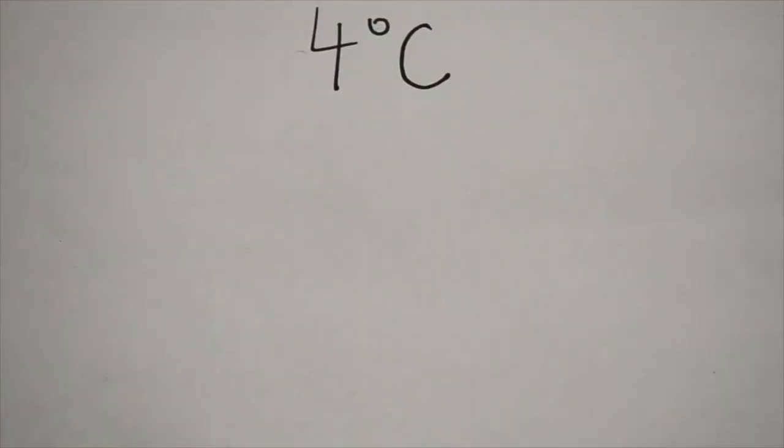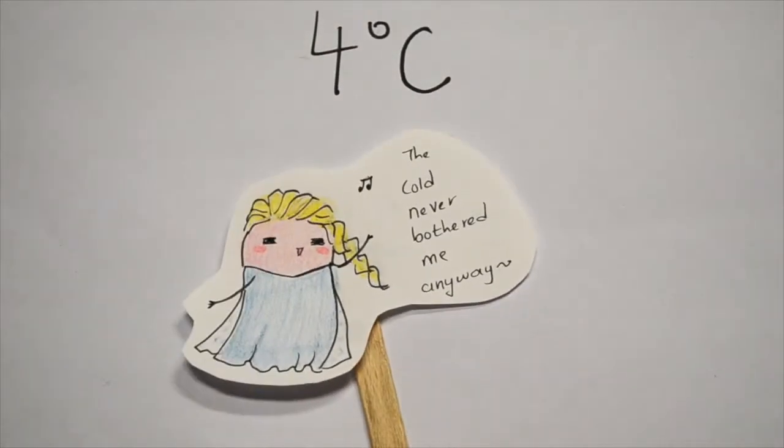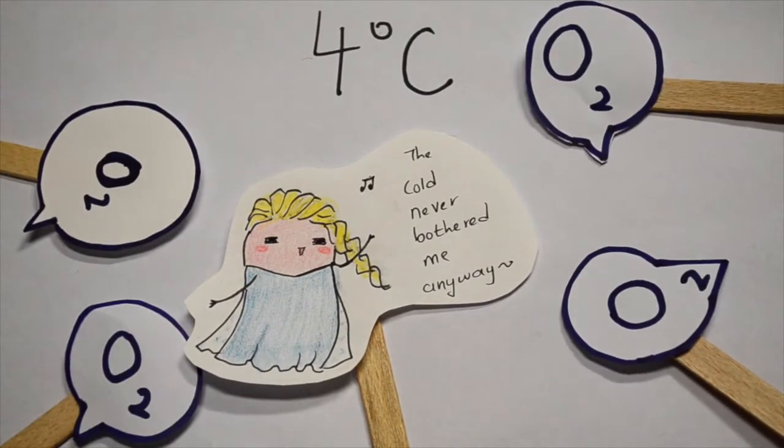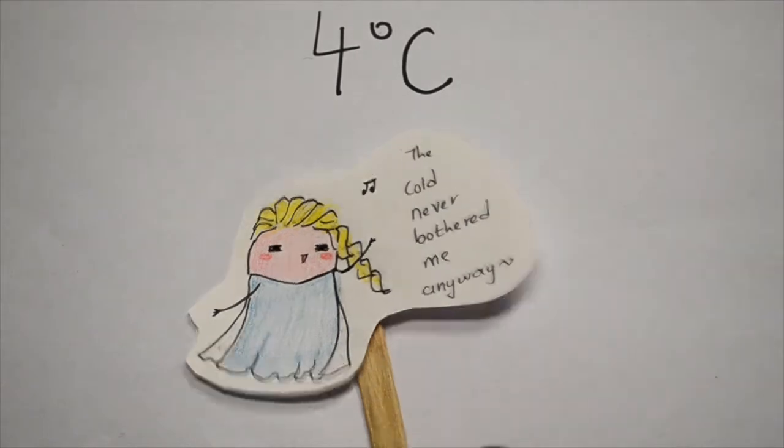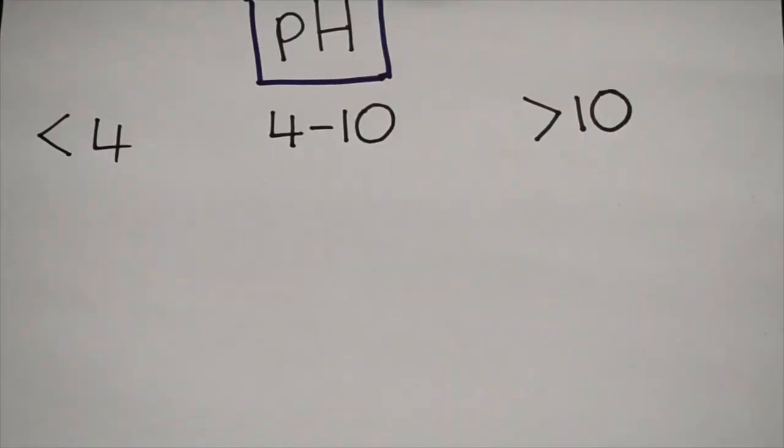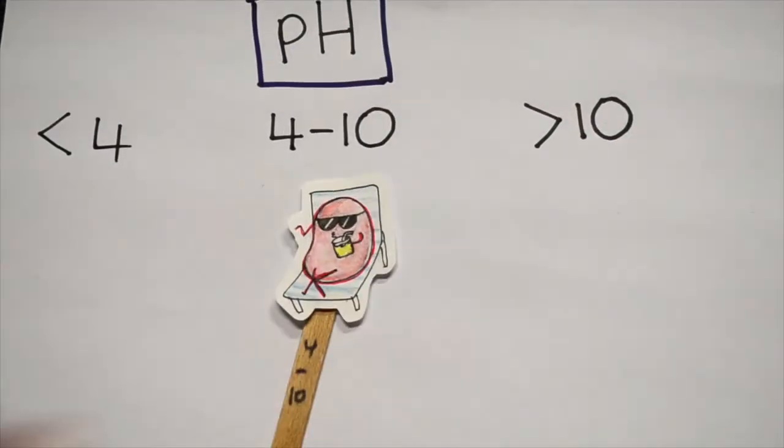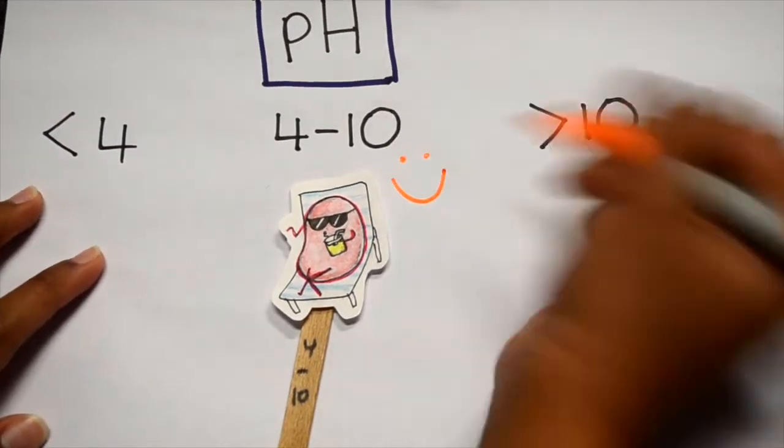If we now reduce the temperature to about 4 degrees Celsius, the bacteria happily thrives in the presence of oxygen as well as without oxygen because it's facultative. As for pH requirement, it thrives best between a pH of 4 to 10.